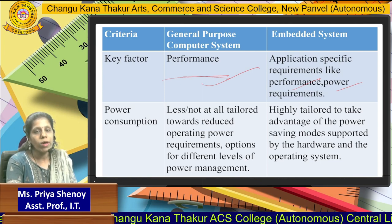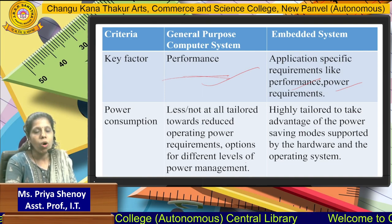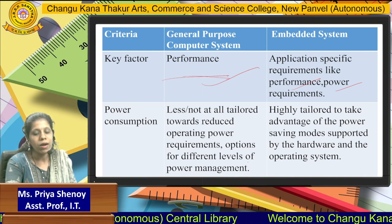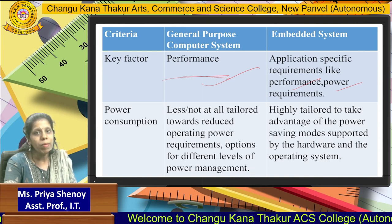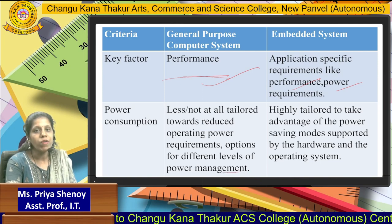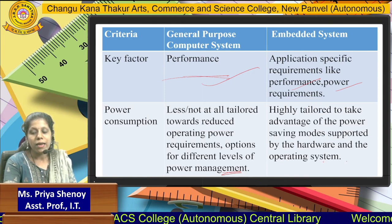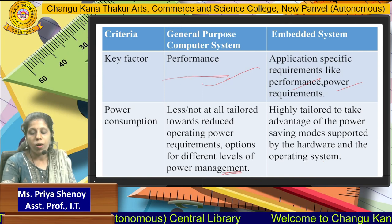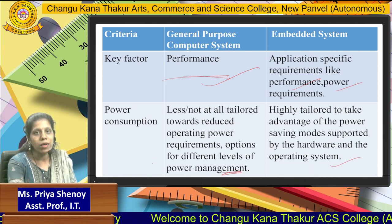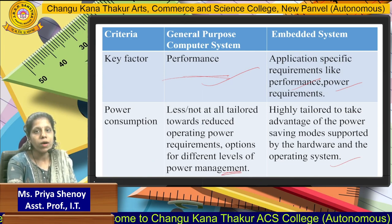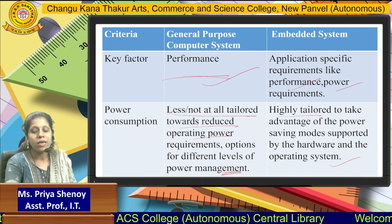In case of a general purpose computer system, it is not tailored — or is less tailored — towards reducing operating power requirements, though there will be options for different levels of power management. In case of an embedded system, it is highly tailored to take advantage of power saving modes supported by the hardware and the operating system. So in terms of power consumption, the general purpose system is less tailored, whereas the embedded system is highly tailored.